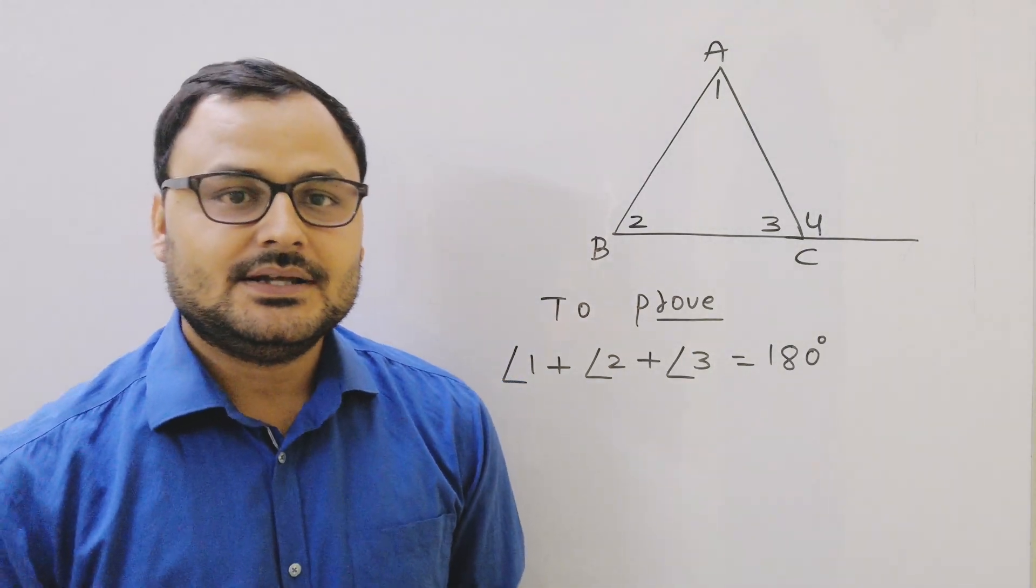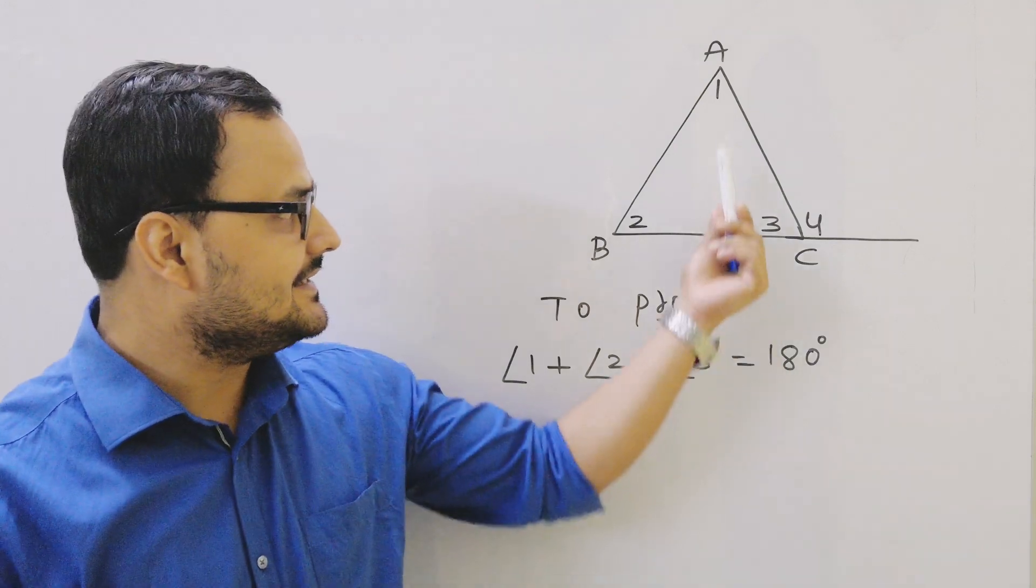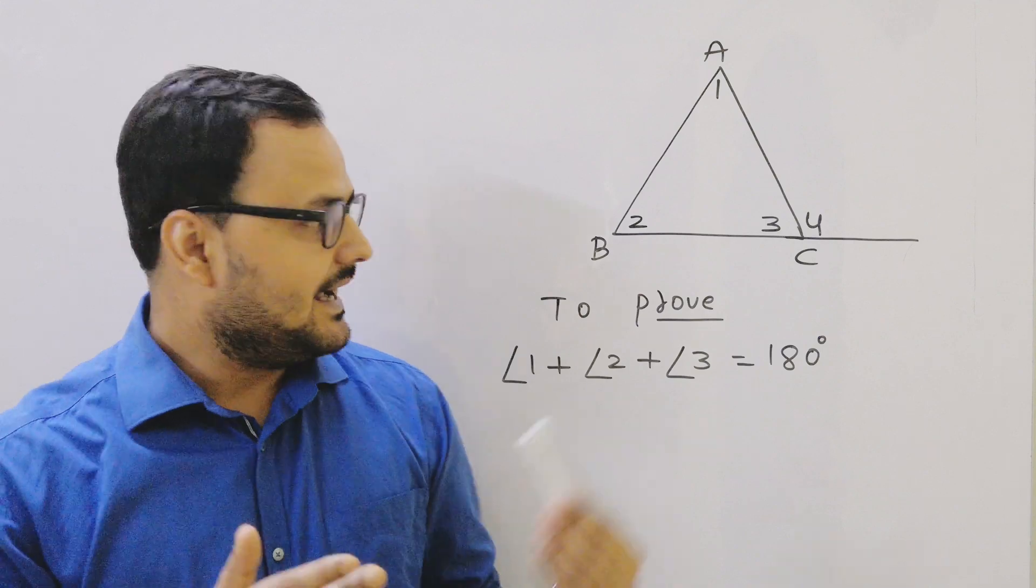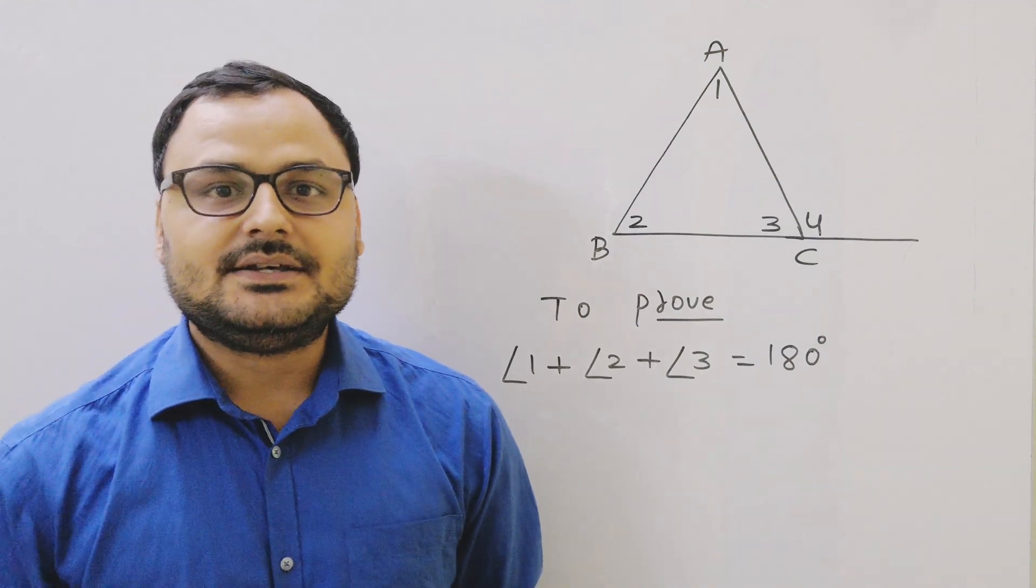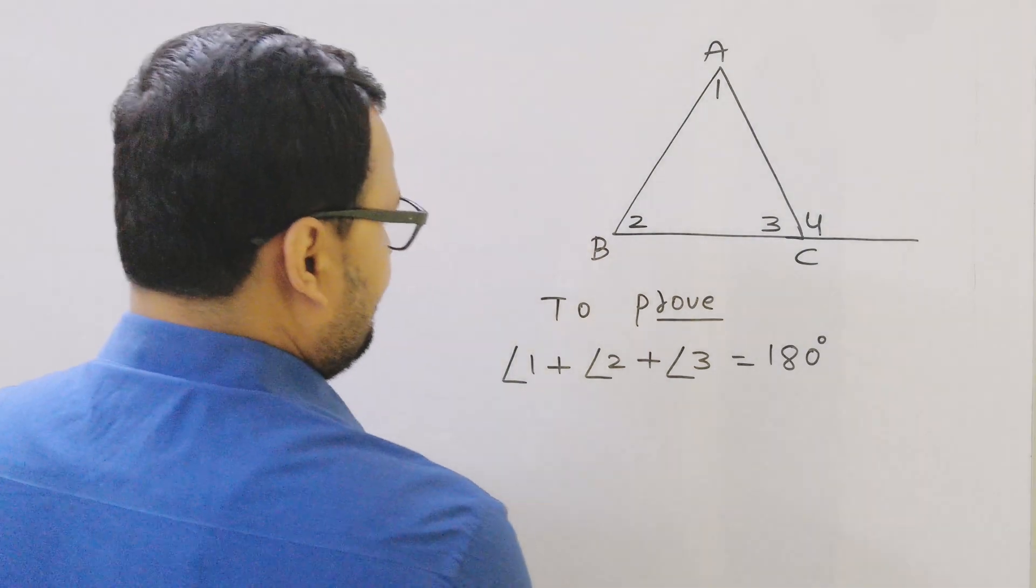If you have any doubt in exterior angle theorem, the link I have already given in the description box. Watch that theorem, then this is going to be very easy for you. Now one more thing I am going to use: angle 3 plus angle 4, they are a linear pair.